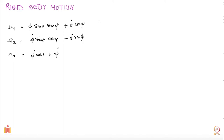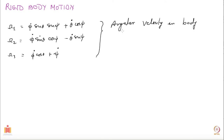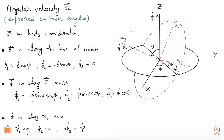This is the angular velocity written in the body coordinates. But you could also do this decomposition in the space frame — in terms of capital X, capital Y, and capital Z — and that will also be fairly simple. I leave it as an exercise: just repeat what I have done and decompose along capital X, capital Y, and capital Z instead.